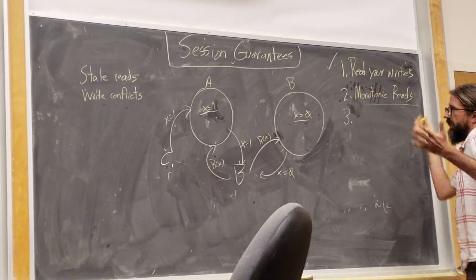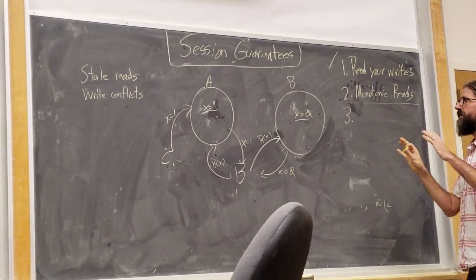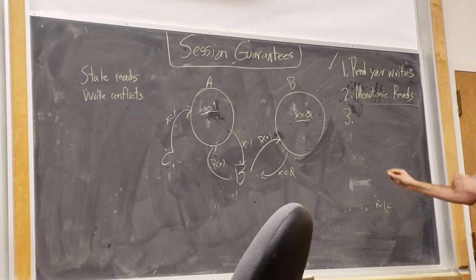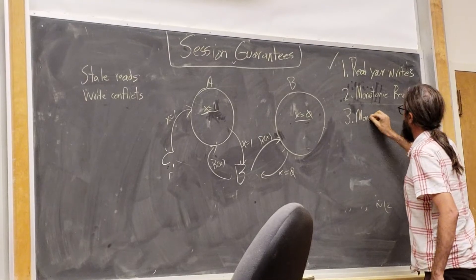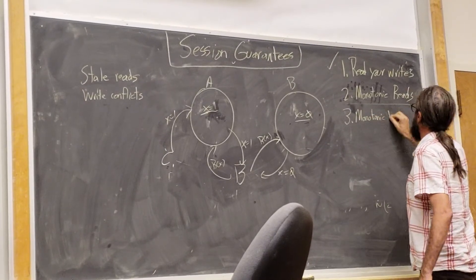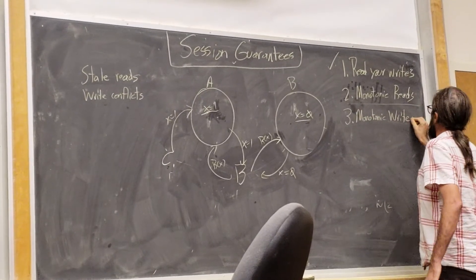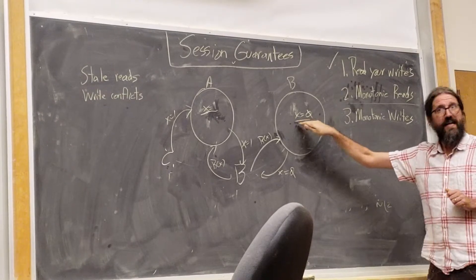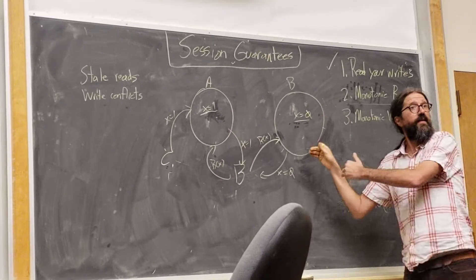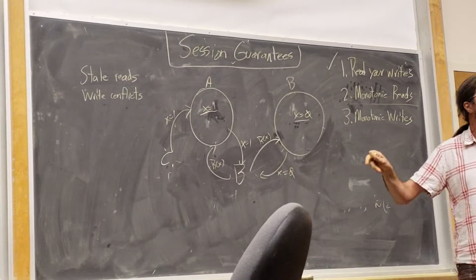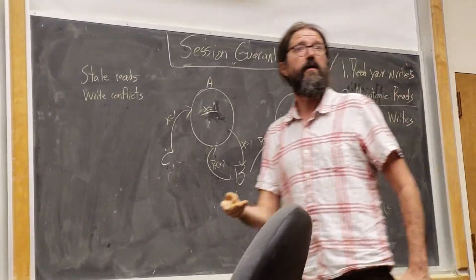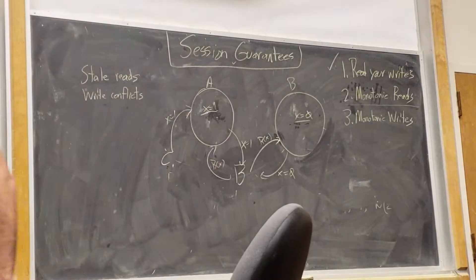Another thing that we might want that I'm not going to have time to get into, but I can just explain from first principles, it's easy, is the idea of monotonic writes. Where even if no one is coming along and reading it, you should never accept a write on a particular variable unless it is strictly later in the causal history than the thing that was already there. You don't overwrite something with an older value. Even if there's no readers.